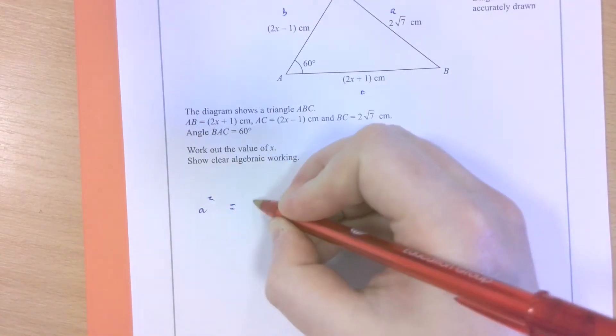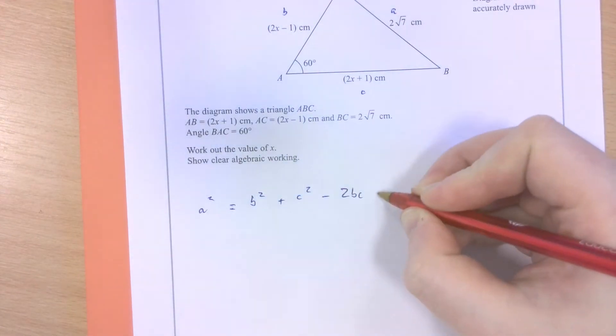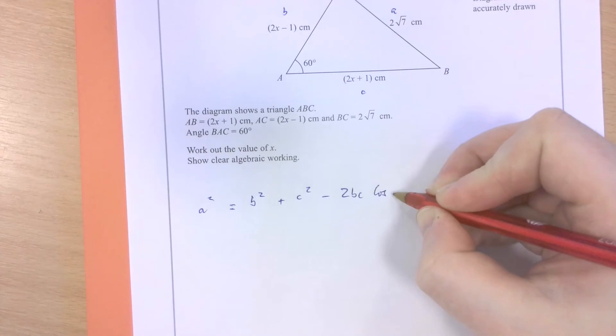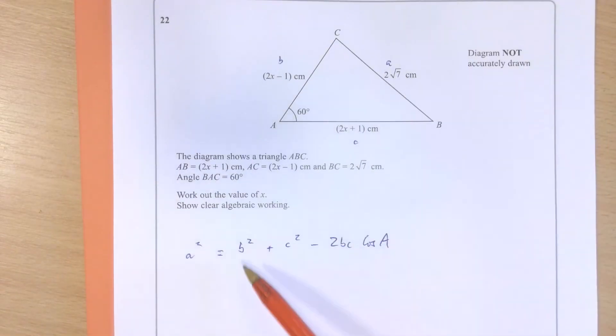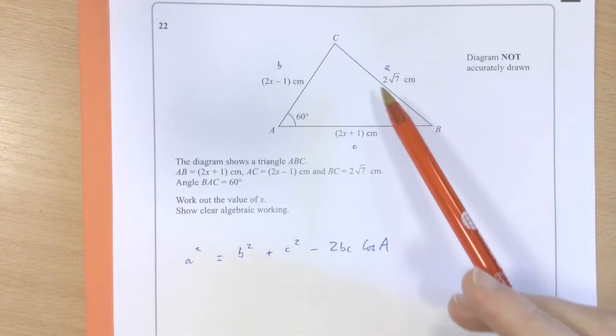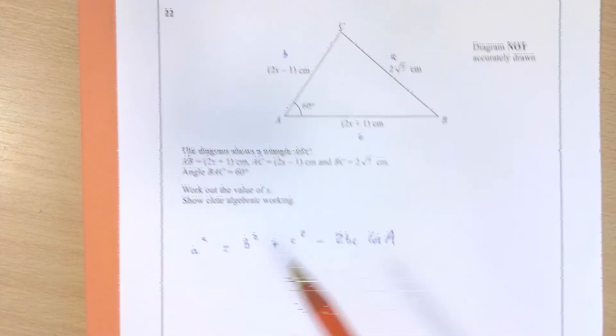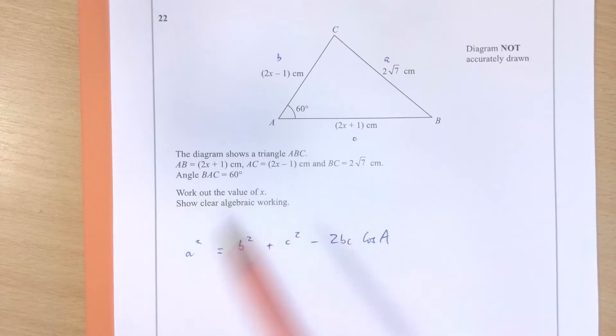A squared equals B squared plus C squared minus 2BC cos angle A here. Where A is here, B is here, C is here, and then angle capital A is obviously here. It's just a case of substituting all of this in and seeing if an equation appears that I can solve to work out what x is.